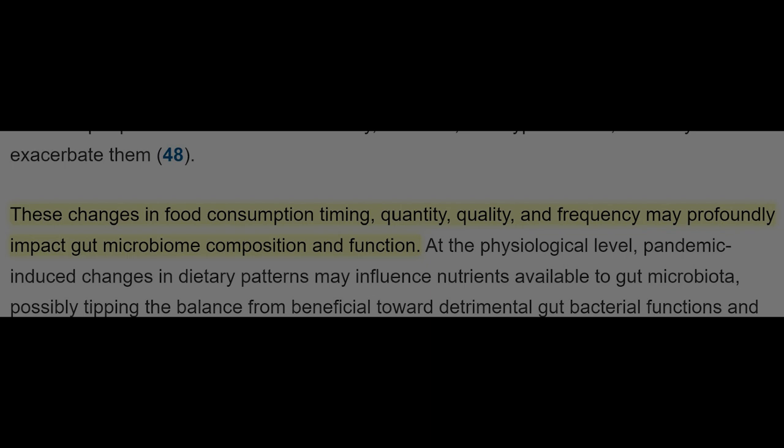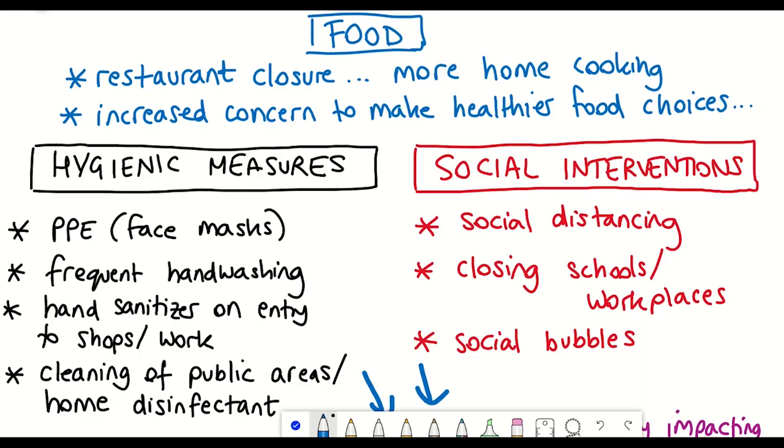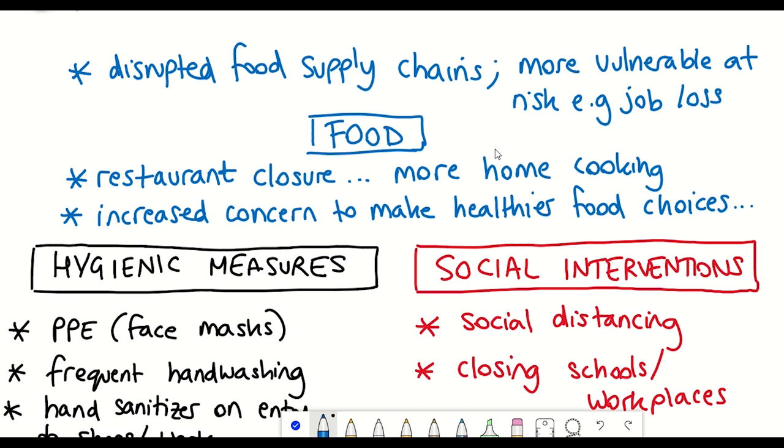However, this is just a small study and the impact of the pandemic on our individual changes in food consumption timing, quantity, quality and frequency may profoundly be impacting our gut microbiome composition and function in a variety of different ways. For example, more generally, the pandemic has disrupted food supply chains and may be putting more vulnerable populations at more risk by facing food insecurity from the economic effects of the pandemic response.